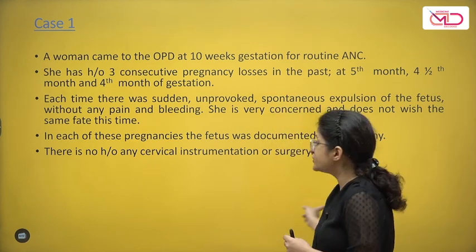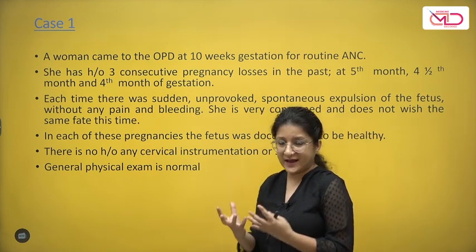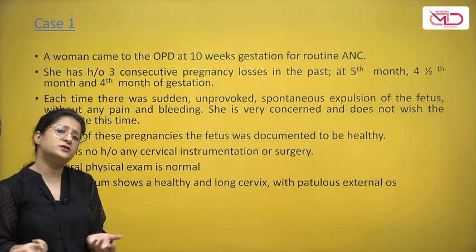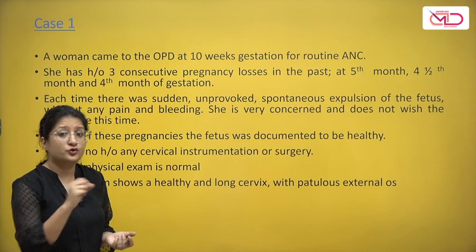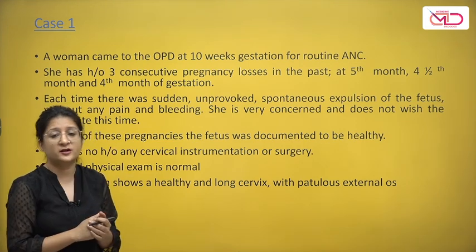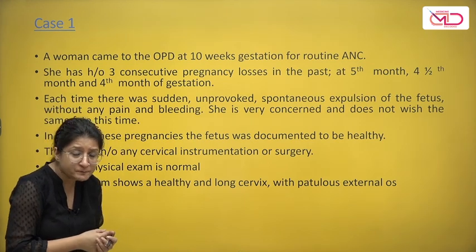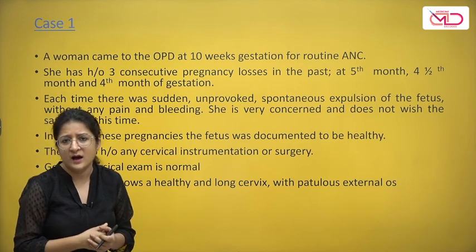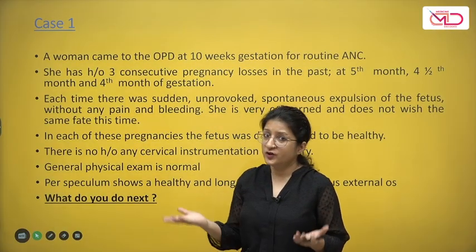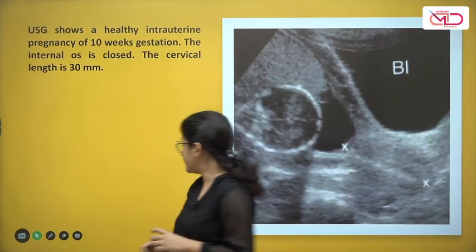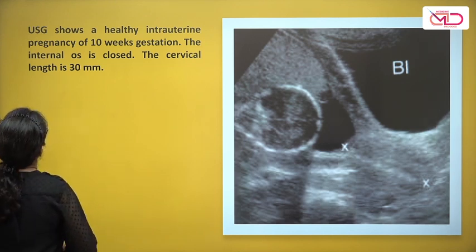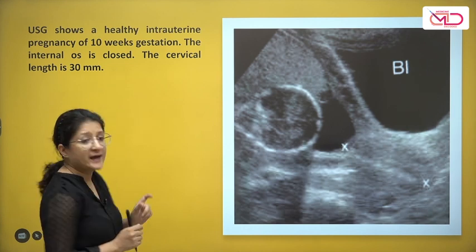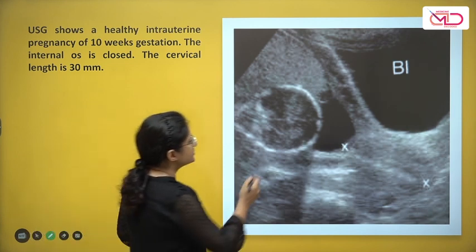General physical examination is normal. Per speculum examination shows a healthy and long cervix with a patulous external os — normal findings. The cervix does not appear too short and the os is closed. An ultrasound is then performed. The report shows a healthy intrauterine pregnancy of 10 weeks gestation, the internal os is closed, and the cervical length is 30 mm.